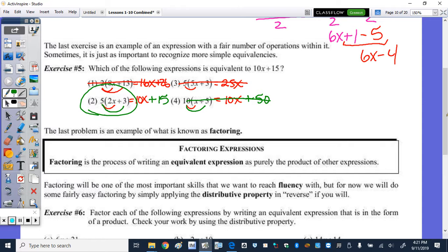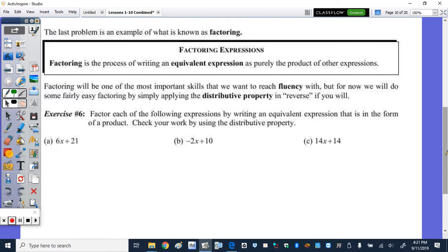To finish things up, we're going to factor. And it says that factoring is the process of writing an equivalent expression as purely the product of other expressions. So let's write that factor times factor equals product. Factoring is one of the most important skills that we want to reach fluency with. But for now, we will do some fairly easy factoring by simply applying the distributive property in reverse.